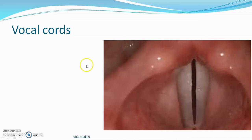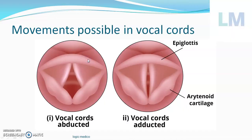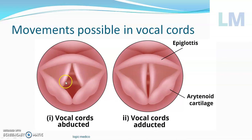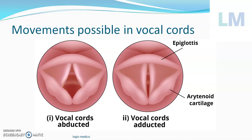The movements possible in the vocal cord: the two vocal cords coming toward the midline is called adduction; movement away from one another is called abduction. There can also be tension or relaxation within the vocal cord. There are five basic positions. Position one: median — the vocal cord is at the midline with no deviation. Position two: paramedian — just 1.5 mm away from the midline. Position three: cadaveric or intermediate — 3.5 mm away from the midline, also called the neutral position.